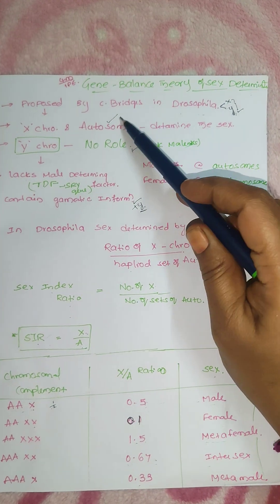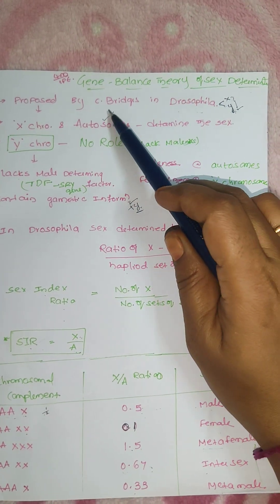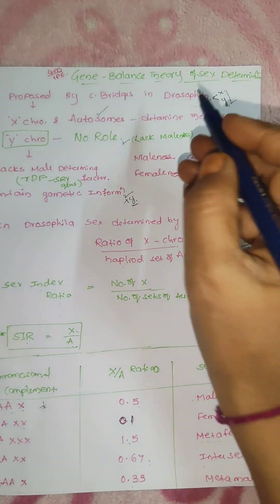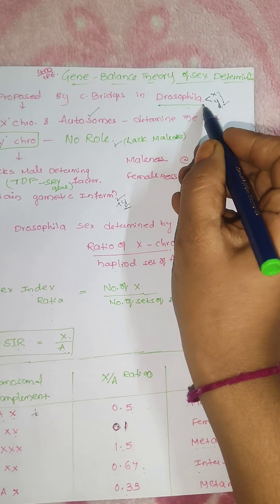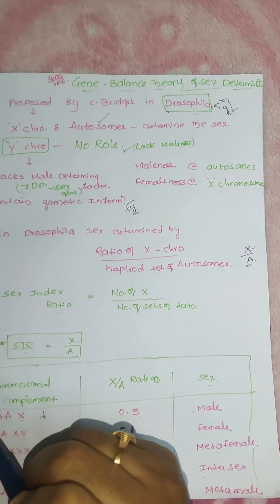This is explained or proposed by CB Bridges. The organism is Drosophila, Drosophila melanogaster.